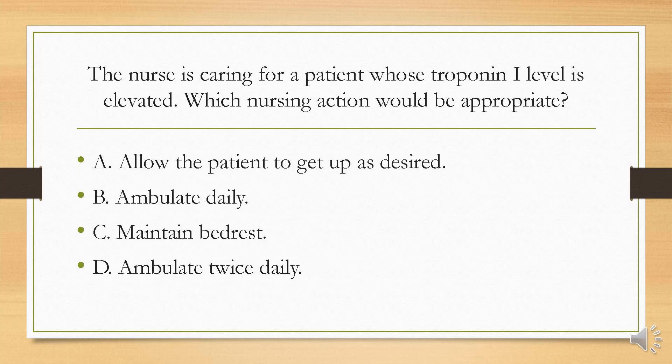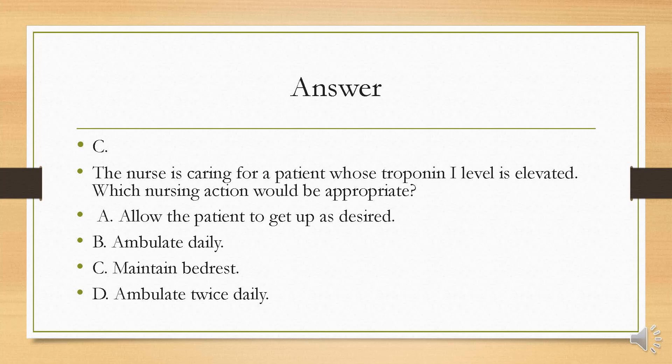The nurse is caring for a patient whose troponin level is elevated. Which nursing action would be appropriate? Is it A, allow the patient to get up as desired; B, ambulate daily; C, maintain bed rest; or D, ambulate twice daily? Your answer is C. The patient is at risk for cardiac damage, so the nurse should maintain bed rest until further orders. These levels of activity could potentiate cardiac damage because you're causing the heart to work harder.